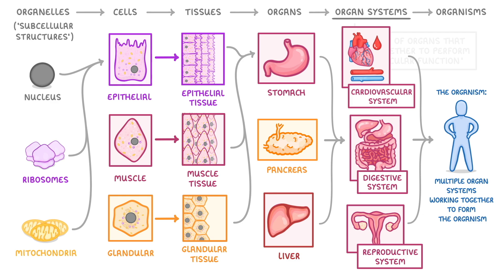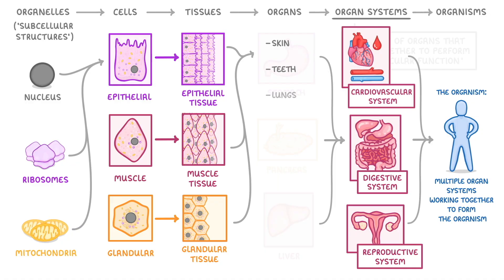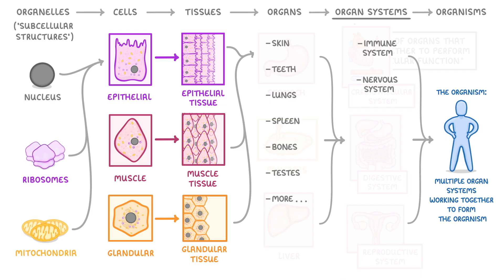One last thing I want to add before we finish is that we've only mentioned a few examples for each level, but in reality there are loads of types of each. For example, other organs include the skin, teeth, lungs, spleen, bones, testes, and dozens more. And there are about 12 different organ systems including the immune system, nervous system, respiratory system, endocrine system, and urinary system.